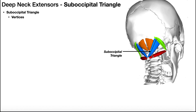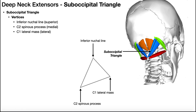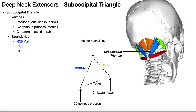The vertices of the suboccipital triangle are: the superior point on the inferior nuchal line, the lateral point at the C1 lateral mass (sometimes the transverse process), and the inferior/medial point at the C2 spinous process, sometimes called the bifid process since it has two projections at the end. The boundaries are the three suboccipital muscles that form the triangle: rectus capitis posterior major, obliquus capitis superior, and obliquus capitis inferior. Rectus capitis posterior minor does not comprise the suboccipital triangle.